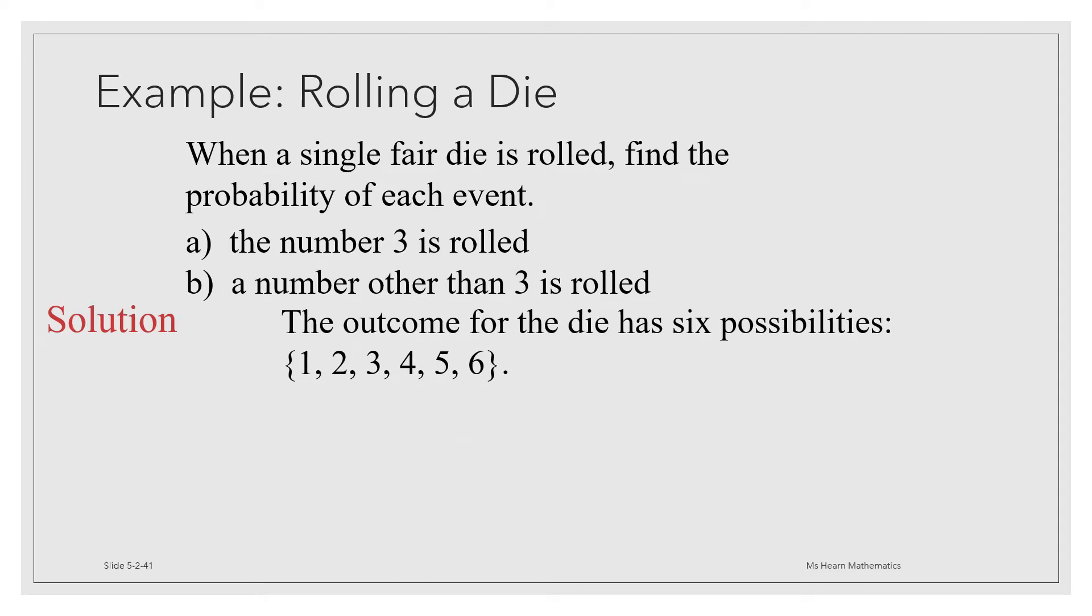Now let's consider this example. When a single fair six-sided die is rolled, find the probability that a, the number 3 is rolled, and b, a number other than 3 is rolled. The outcome for the die has 6 possibilities again: 1, 2, 3, 4, 5, and 6. The probability of getting a 3 is going to be 1 chance of getting a 3 out of 6. So the probability of 3 is 1 sixth. The probability of a number other than 3 would be, we'd have to count the number of favorable outcomes, which would be everything except 3.